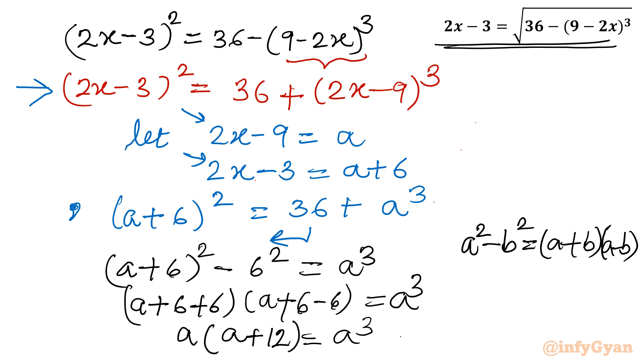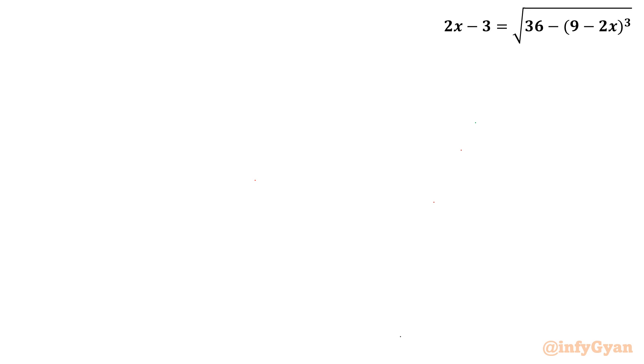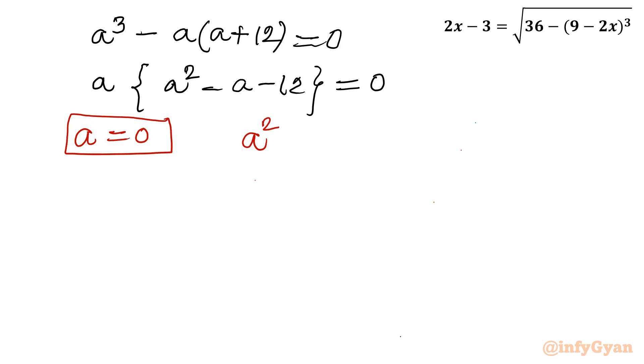Now I will take all terms to one side. a cube minus a times a plus 12 equal to 0. Take a common, so a times a square minus a minus 12 equal to 0. If f dot g equals 0, then either a equals 0, or a square minus a minus 12 equals 0.